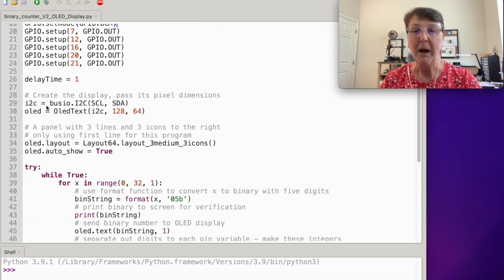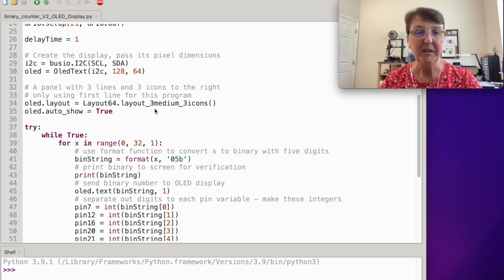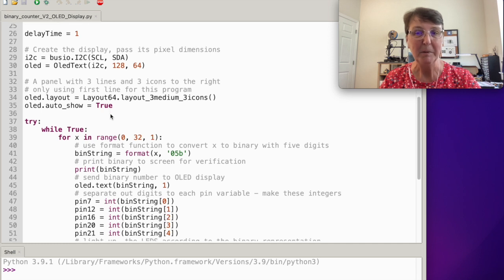Then we'll need to create some objects to control the OLED and set up the correct pixel dimensions and so forth to use the display. I'm picking a particular layout that has three lines, it can actually have some icons too but I'm just choosing one of the three lines. I'm saying make sure as soon as I send that to you to go ahead and display it. There's a fair amount of control in this library and I'm sure I'll spend some more time trying to learn all its secrets.